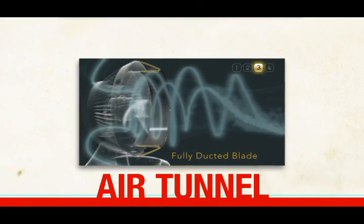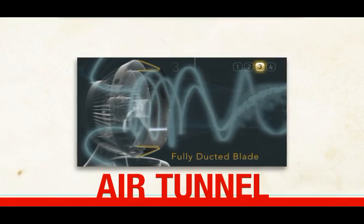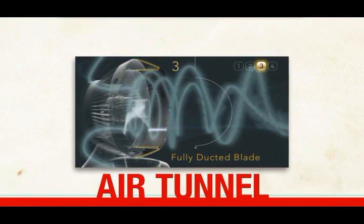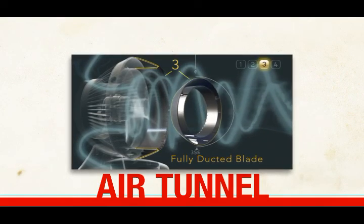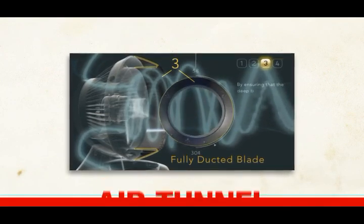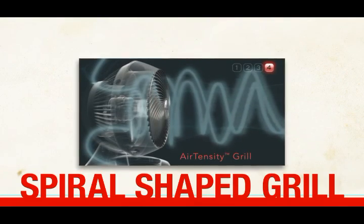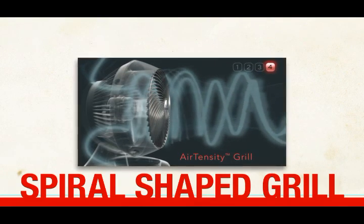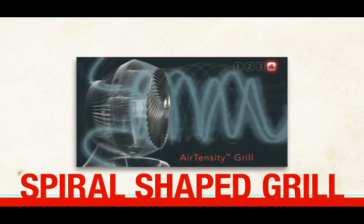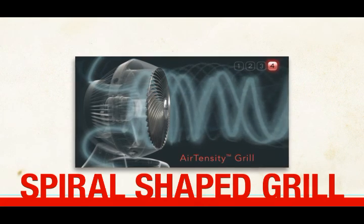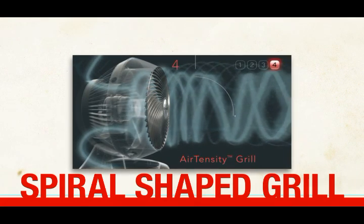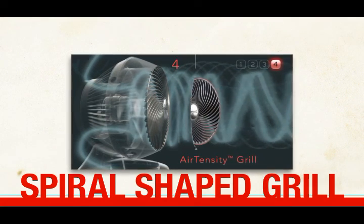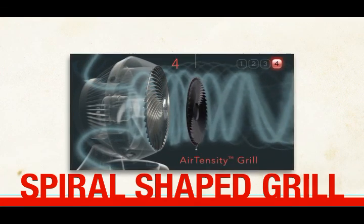The third difference is the air tunnel that focuses all of the air to the front of the product, where it meets the fourth and newest difference — a spiral-shaped grille that twists in the opposite direction of the spinning blades. This offsets the twisting motion of the air, extending it far into the room.